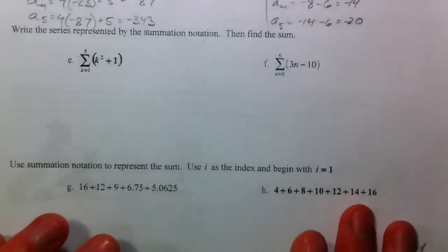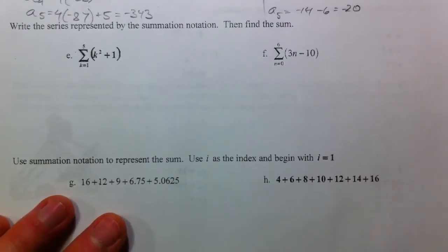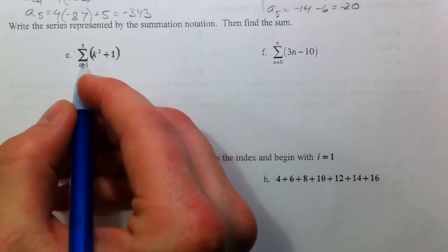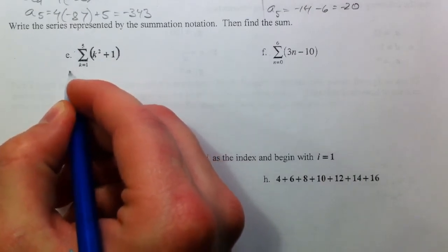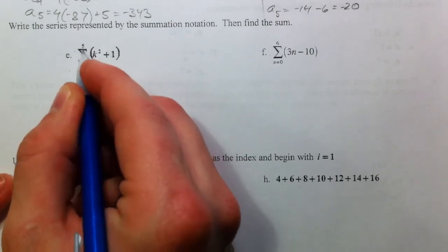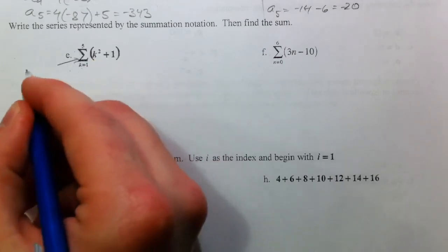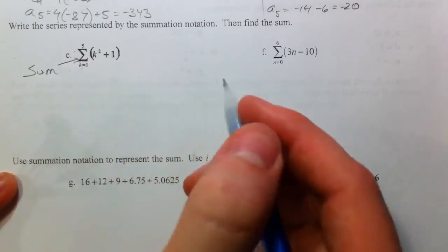Alright, so now on to sigma notation. When we have a sigma, we start at this. We start with k equals 1, and go up to 5, and the sigma is telling us to find the sum. We're going to add all these up.